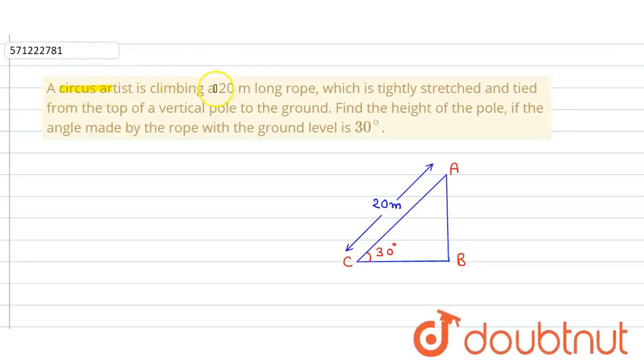In the given question, a circus artist is climbing a rope of 20 meters long, which is tightly stretched and tied from the top of a vertical pole to the ground. And we have to find the height of that pole if the angle made with the ground is 30 degrees.